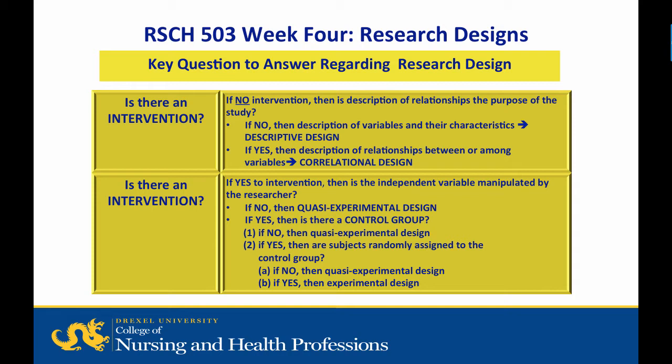Next question: is there an intervention? If yes, then one asks if the independent variable is manipulated by the researcher. If no, then the design is quasi-experimental. If yes, then ask if subjects are randomly assigned to the control group. If no, then the design is quasi-experimental. If yes, then the design is experimental.